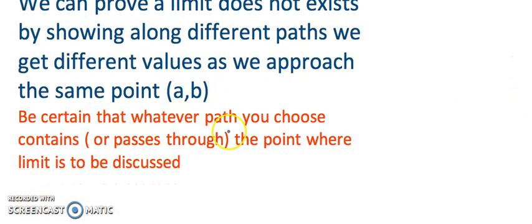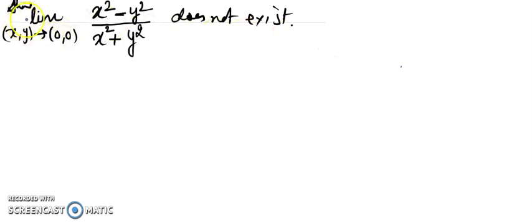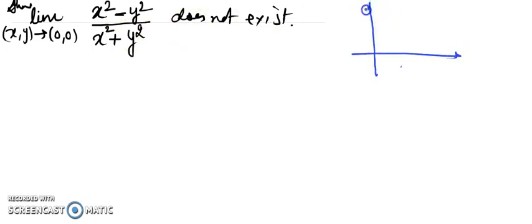One important point to take care of: whatever path you select, ensure that it passes through the point where you are discussing the limit. In this first question, I want to show that the limit of (x² - y²)/(x² + y²) does not exist at the origin. Let's see how this function behaves as we get closer to that point.